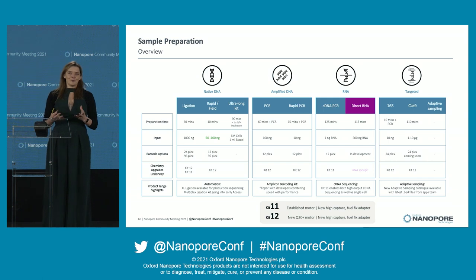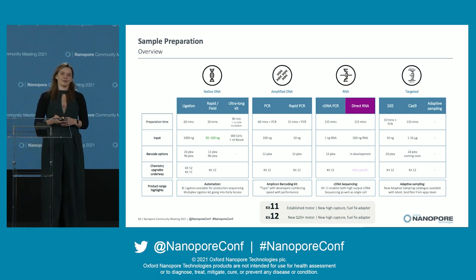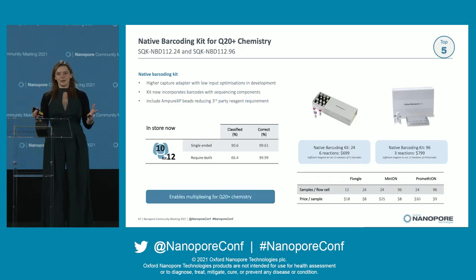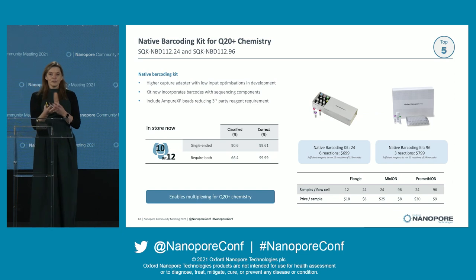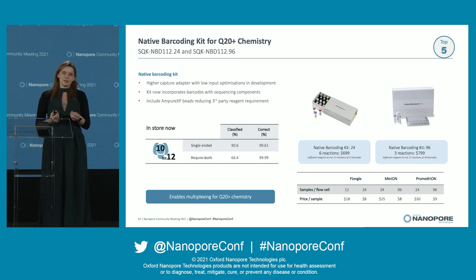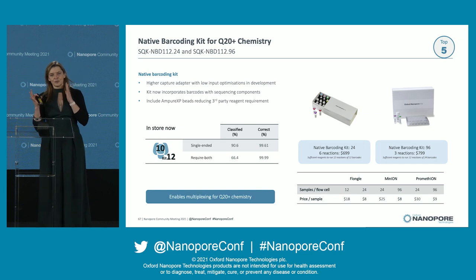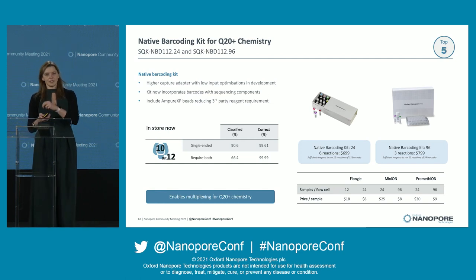The top kits we are in the process of releasing: first, native barcoding for Q20 chemistry. We have a lot of requests for this — many of you have been very excited about the performance and want to be able to multiplex. So here they are — the native barcoding kits. We're launching these in the shop today, you can go and order them. We're launching them as sequencing kits — integrated, with a kit containing 24 barcodes and a kit with 96. It enables incredibly competitive price per sample. And as Stuart said, we are incredibly accurate at detecting, classifying, and correctly identifying the barcodes.